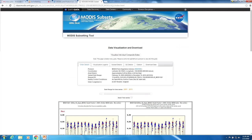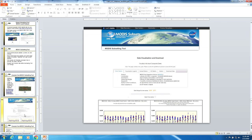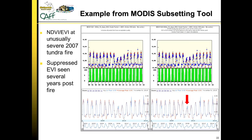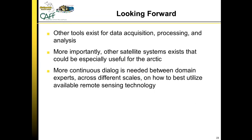It's a pretty unique and cool tool to visualize your data before you commit to actually downloading it. You can download these plots as image files or download the actual data, and there are various options for how you want to get the data. Looking forward, the subsetter tool is a unique tool, but there are many other tools out there for data acquisition, processing, and analysis. More importantly, there are other satellite systems that exist that could be especially useful for the Arctic and Arctic biodiversity assessments.